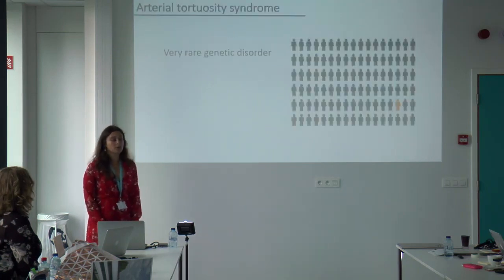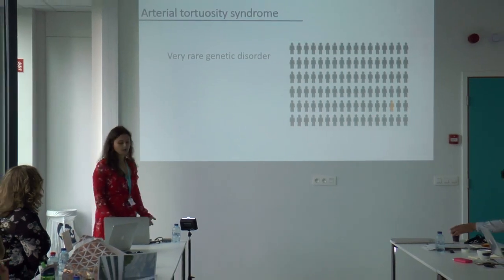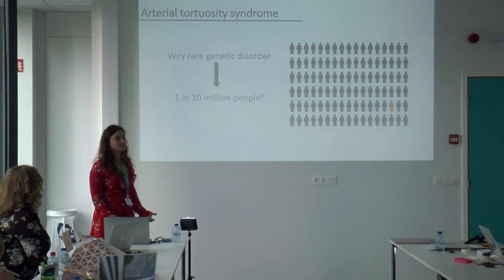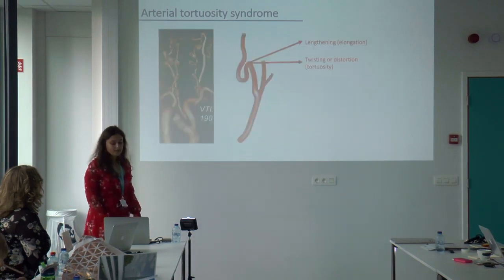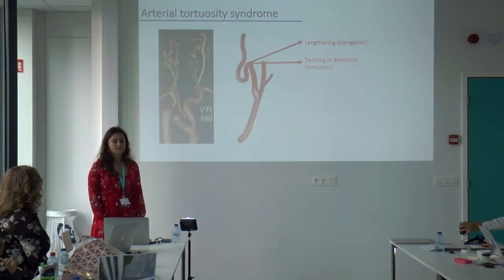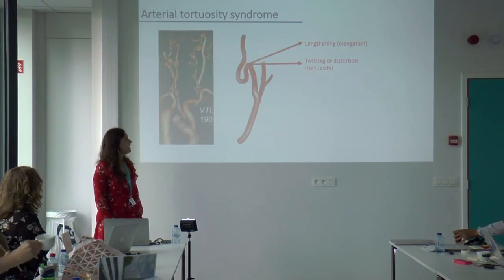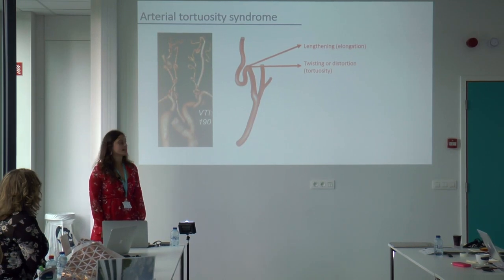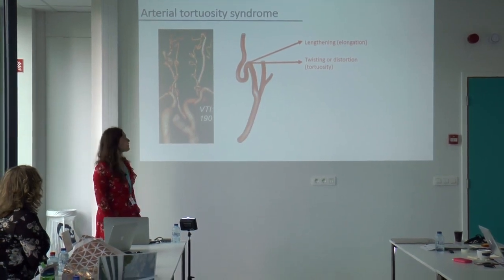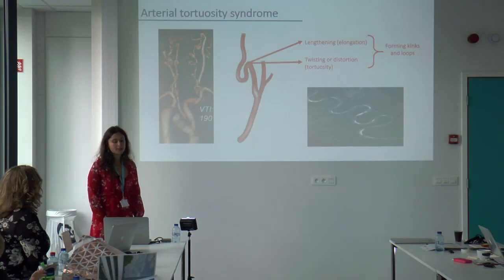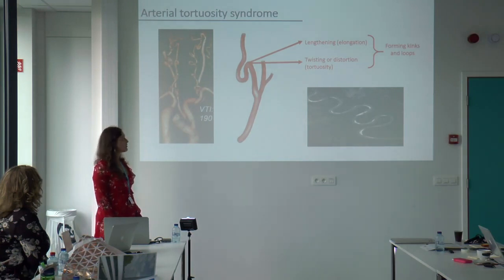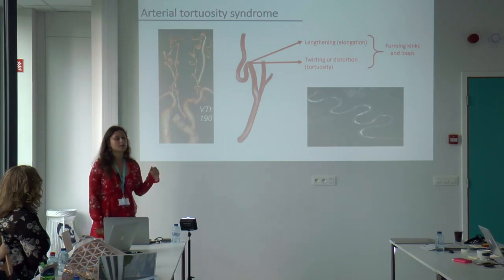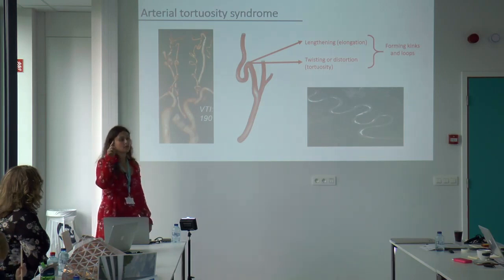Most of you already know it's a very rare genetic disorder. Why do we say very rare? Because it only affects 1 in 10 million people. It is characterized by the lengthening or elongation and the twisting or distortion — which we call tortuosity — of the large and middle-sized arteries, which you can see on the picture. This results in the formation of kinks and loops, just like the arteries, but you can also compare it with a river which makes turns in its course.